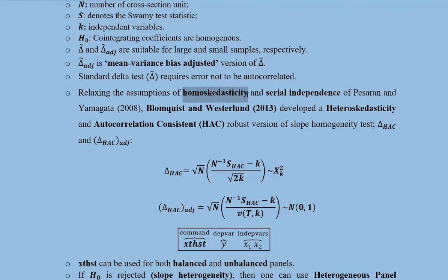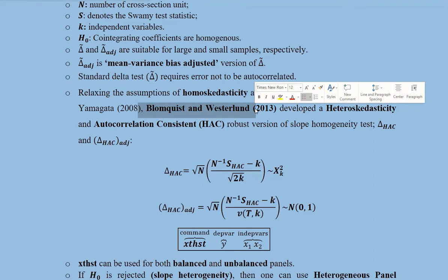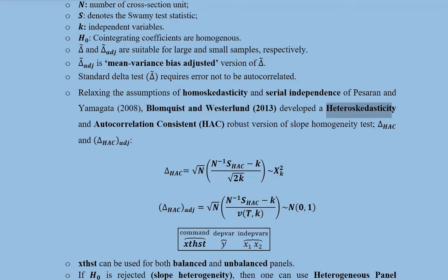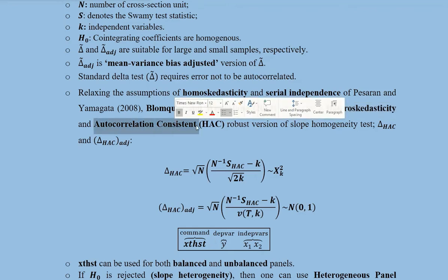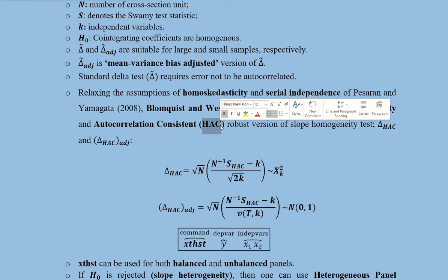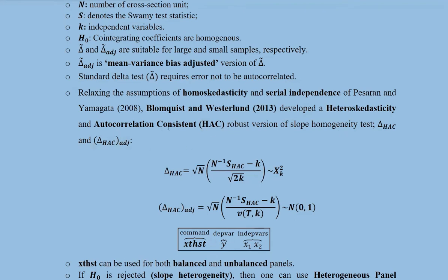That is by dropping the assumption of homogeneous elasticity and serial independence which was there in the version given by Pesaran and Yamagata. These two individuals in 2013, Blomquist and Westerlund, gave this idea. Their version of the test was consistent with the heteroscedasticity and autocorrelation. That is why their version is known as Delta HAC, that stands for heteroscedasticity and autocorrelation consistent. It is a robust version.